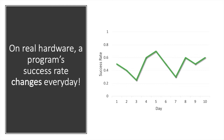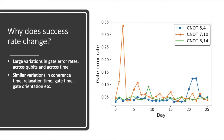When we started out building a compiler for a 16-qubit system from IBM, we noticed that the success rates of our programs changed quite dramatically every day. Why does this happen? It turns out that the different qubits in the system have different error rates, and these error rates also change daily. In fact, many properties of the system which are important for program performance change frequently.